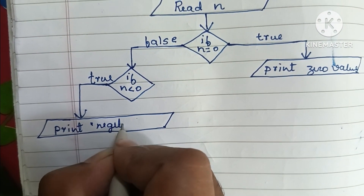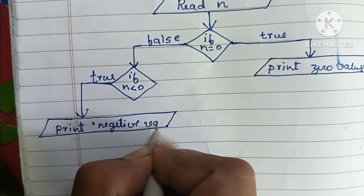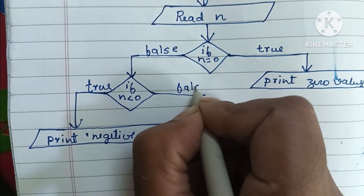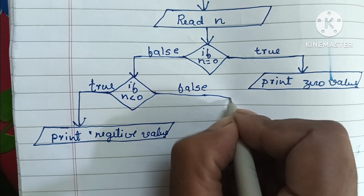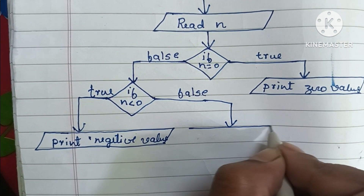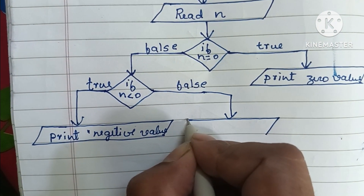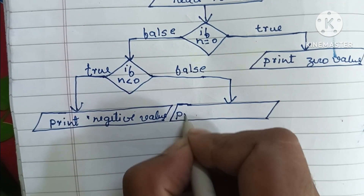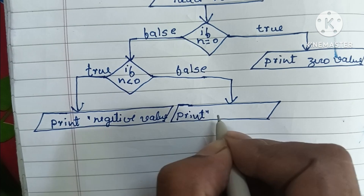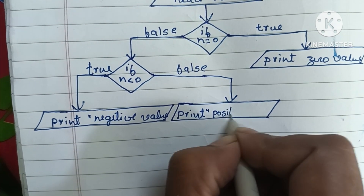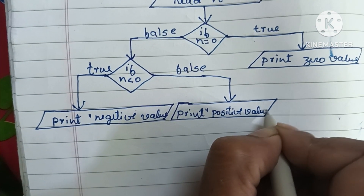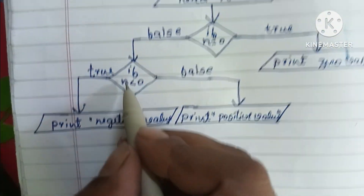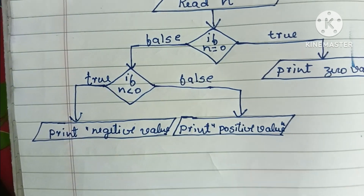If the condition N less than zero is false, we print 'positive value'. Output values are always written within a parallelogram shape, and conditions are written within a diamond shape.